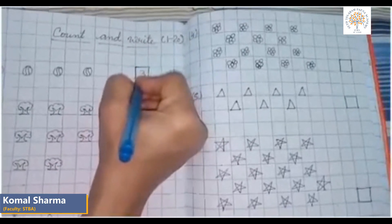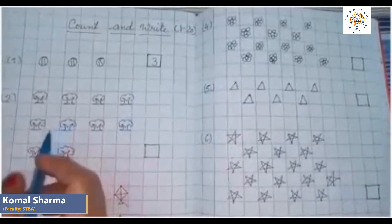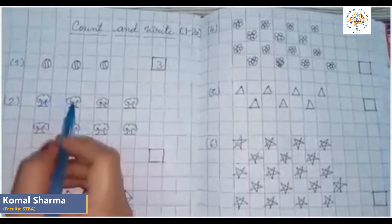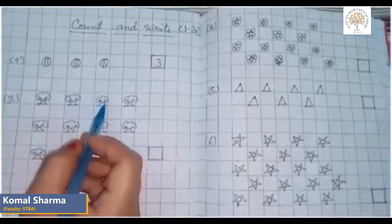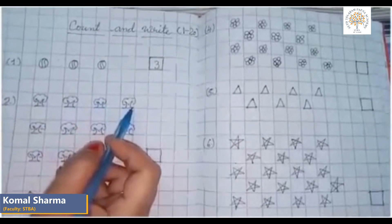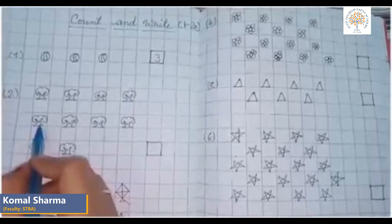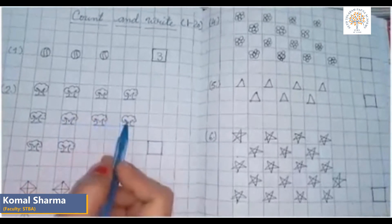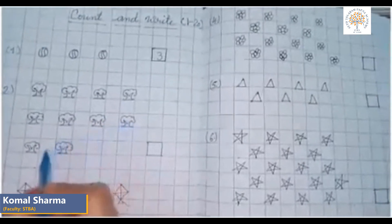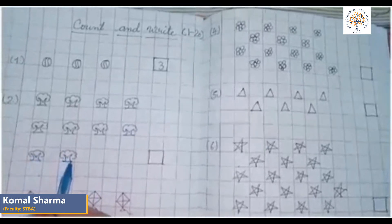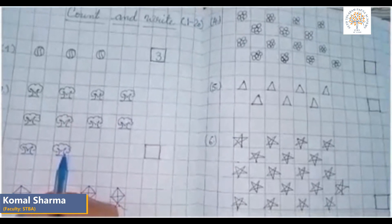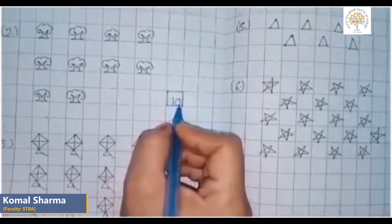We will write three in the box. Let us count the pictures of trees: one, two, three, four, five, six, seven, eight, nine, and ten. There are ten trees. How many trees are there? Ten. So the answer is ten.